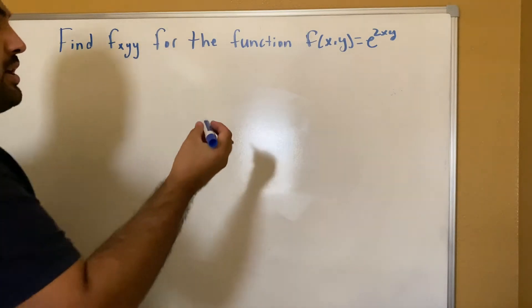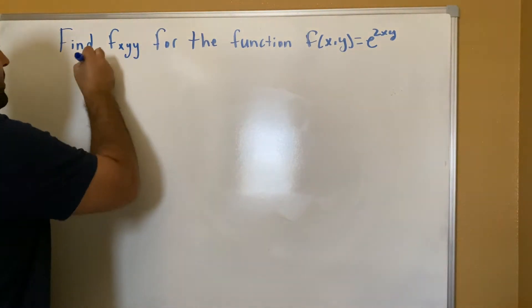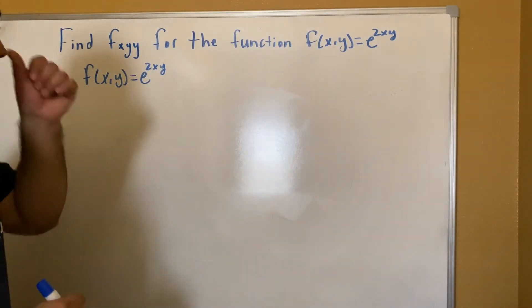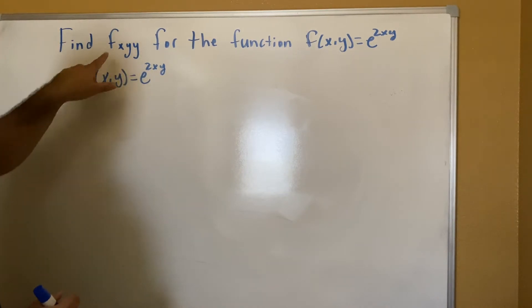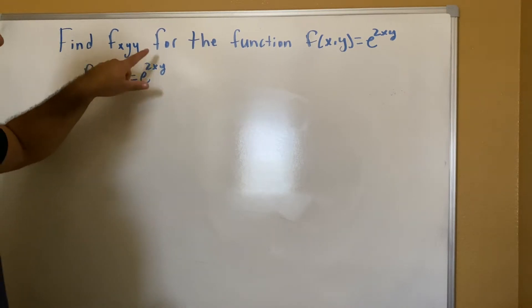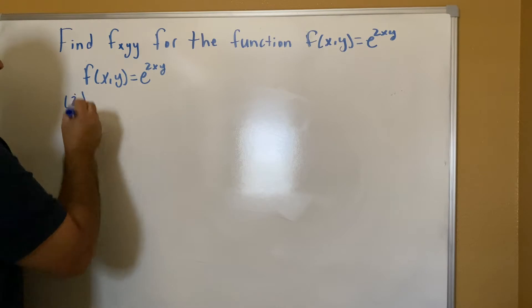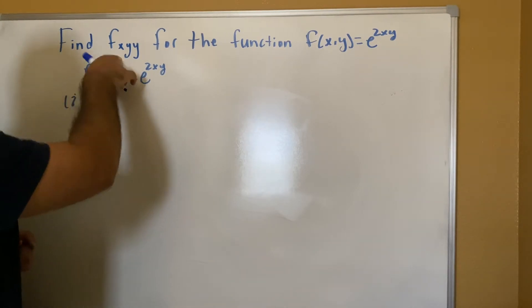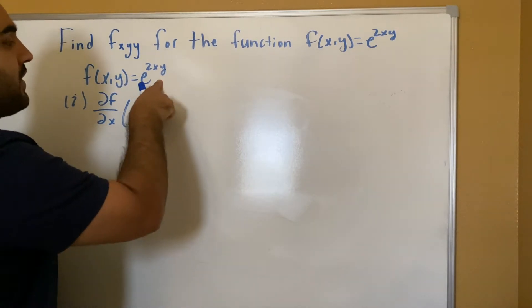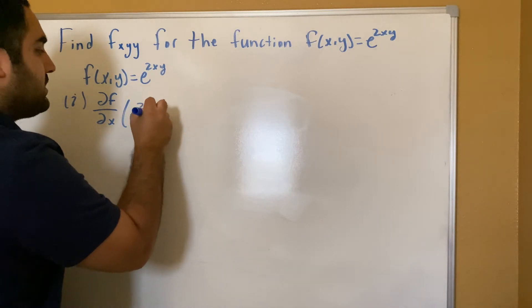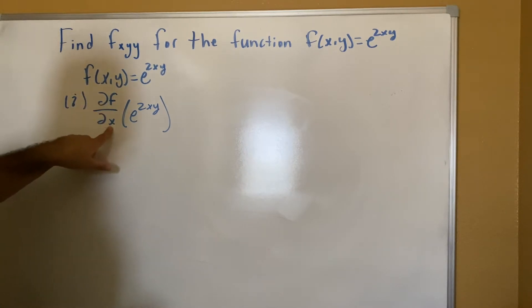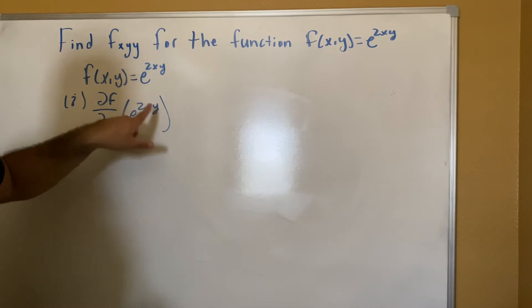Now we're going to go ahead and start. I'm going to go ahead and rewrite our function once more. In order for us to solve this, what I'm going to do is start taking the partial derivatives, going from left to right, pertaining to that variable in that spot. So our first partial is going to be in terms of our x variable — the partial of the function, which is just e to the 2xy.